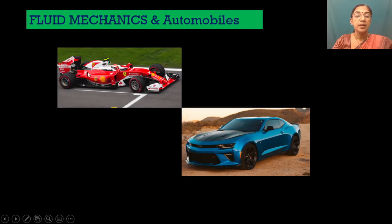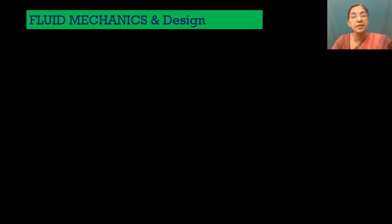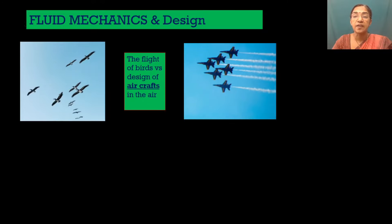Nowadays fluid flow modeling can be used to design the shape of automobiles. Here we have a racing car and a passenger car. Fluid flow modeling can be used to design their shapes in such a way that in both cases air resistance is minimal.